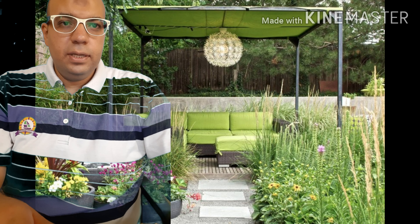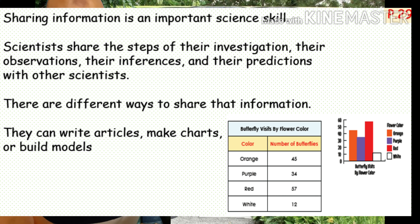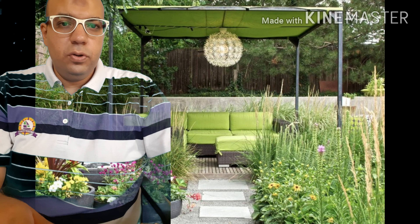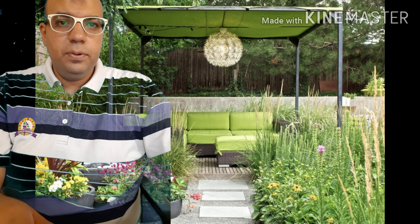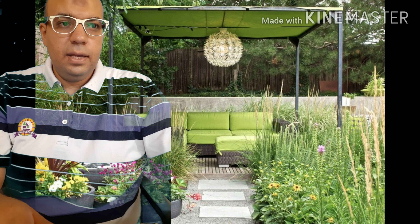Sharing information is an important science skill. Scientists share the steps of their investigations, their observations, their inferences, and their predictions with other scientists. They can write articles, make charts, or build models. Sharing information is important because science is ongoing — new investigations can be made based on the results communicated from other scientists' investigations.